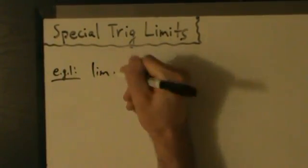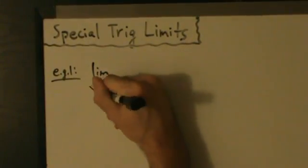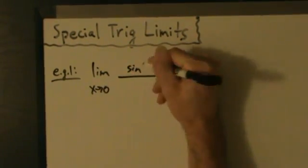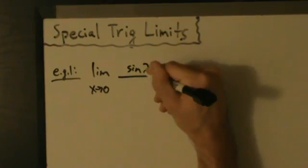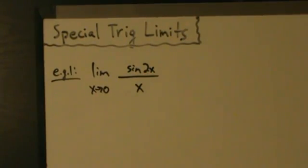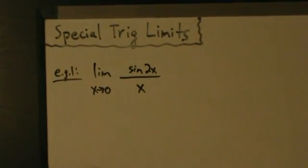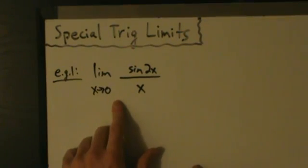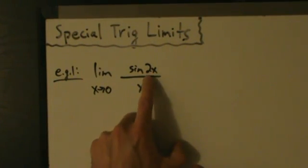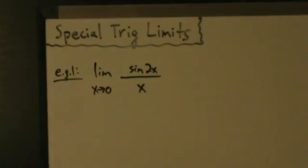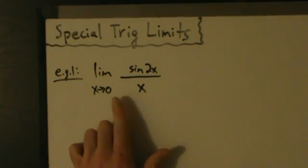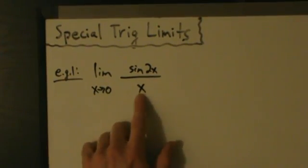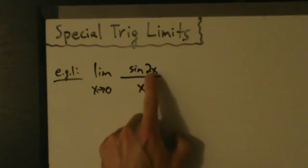Let's find the limit as x goes to 0 of sine of 2x divided by x. This almost looks like the special trig limit we just saw, but the difference is we have 2x inside the sine.